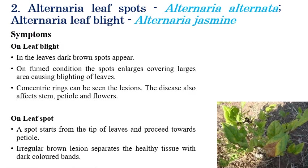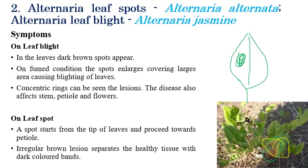Alternaria leaf spot or Alternaria leaf blight is caused by Alternaria alternata and Alternaria jasmini. The most prominent and common symptom is concentric rings, which can be seen on leaves. Initially small concentric rings appear, and in later stages the leaf edges coil and the entire leaf shows brown discoloration.